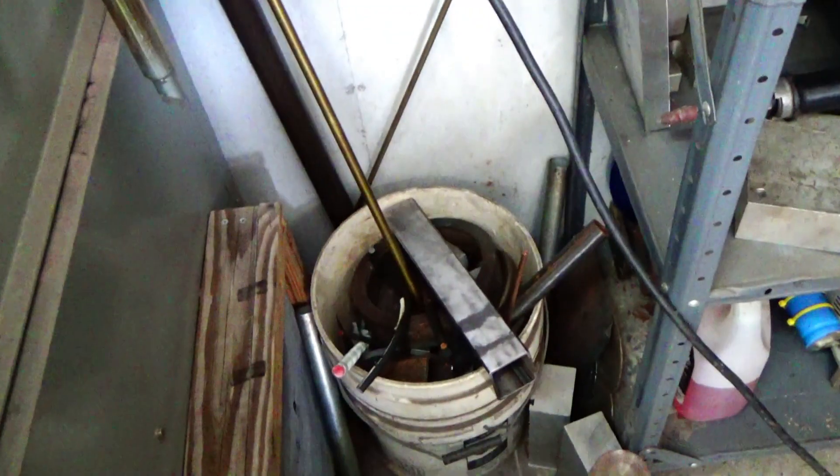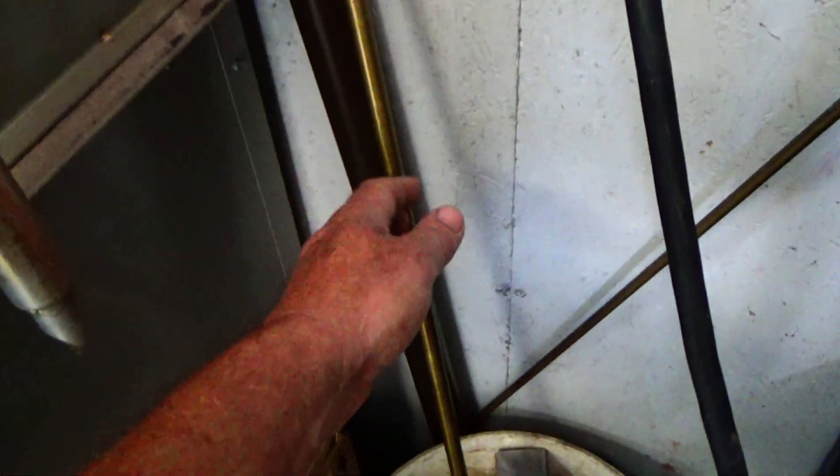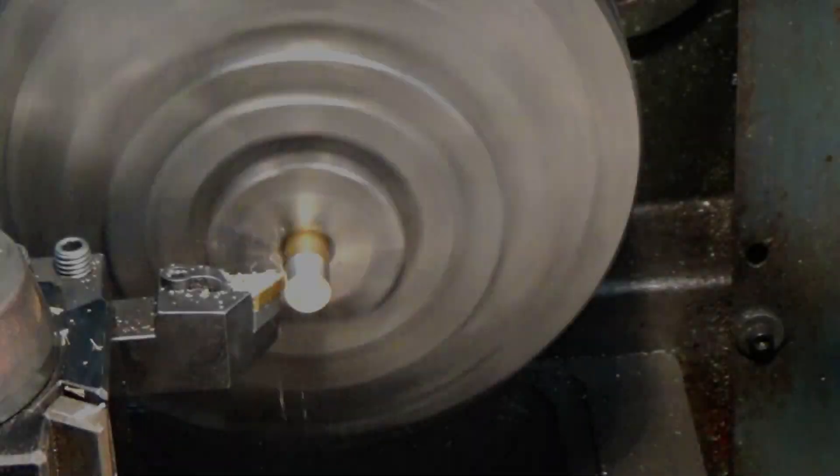So let's think. Let's go over to the junk bucket and see if we can't find anything in there we can make something out of. Now we've got that brass rod, and that brass rod looks about the same size as that drive, so let's whip it into something.